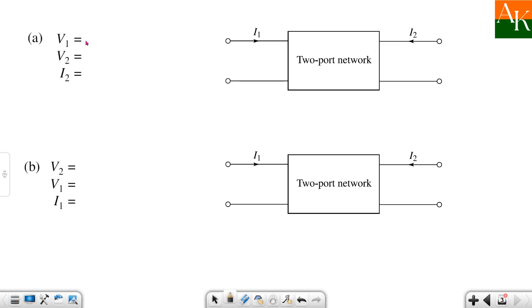V1 is equal to Vs. The second port has to be short-circuited, so when we short-circuit it, V2 becomes zero.